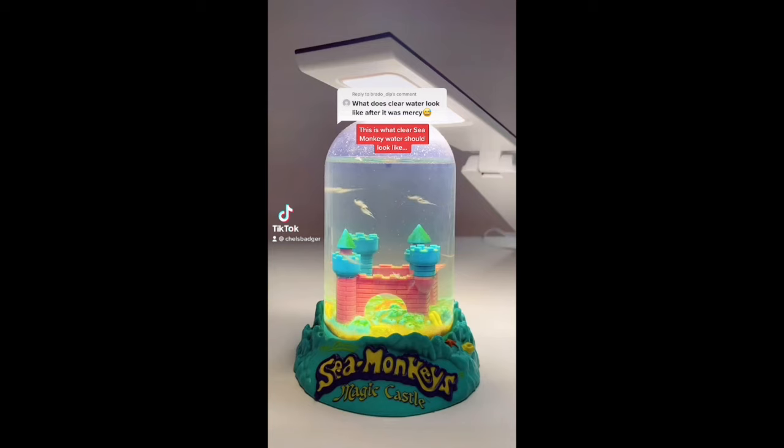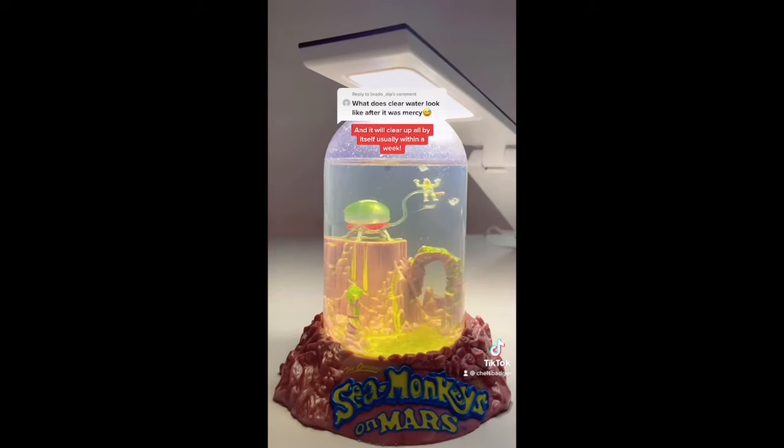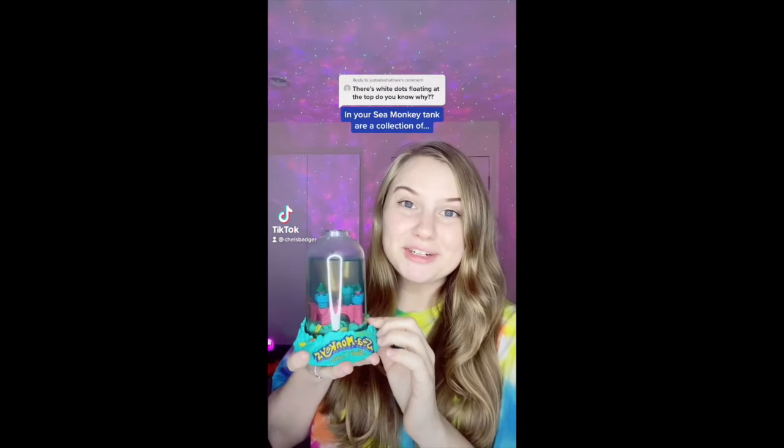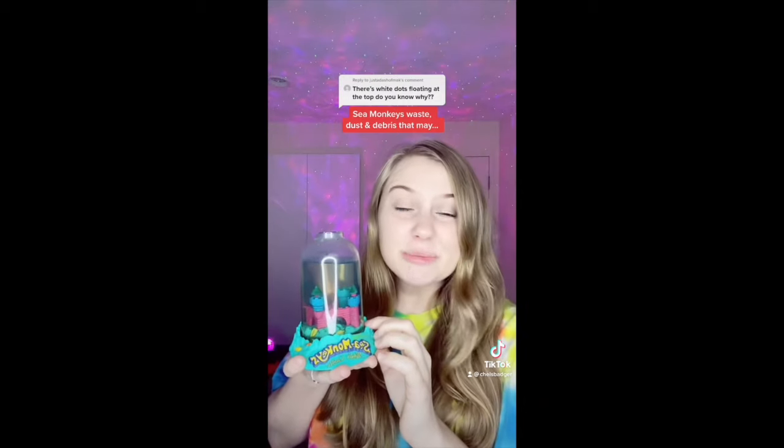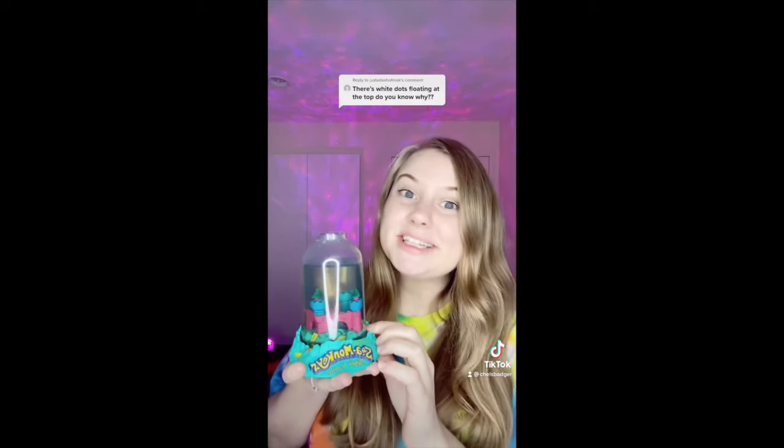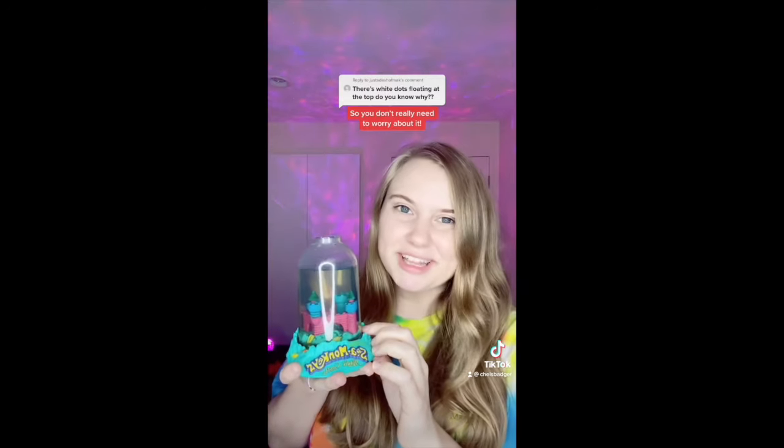This is what clear sea monkey water should look like. It's very normal for the water to be murky after you've fed them and it will clear up all by itself usually within a week. The little white dots that you see floating in your sea monkey tank are a collection of sea monkeys waste, dust and debris that might have found its way into the tank, uneaten food, and deceased sea monkeys. It's definitely not bacteria though so you don't really need to worry about it.